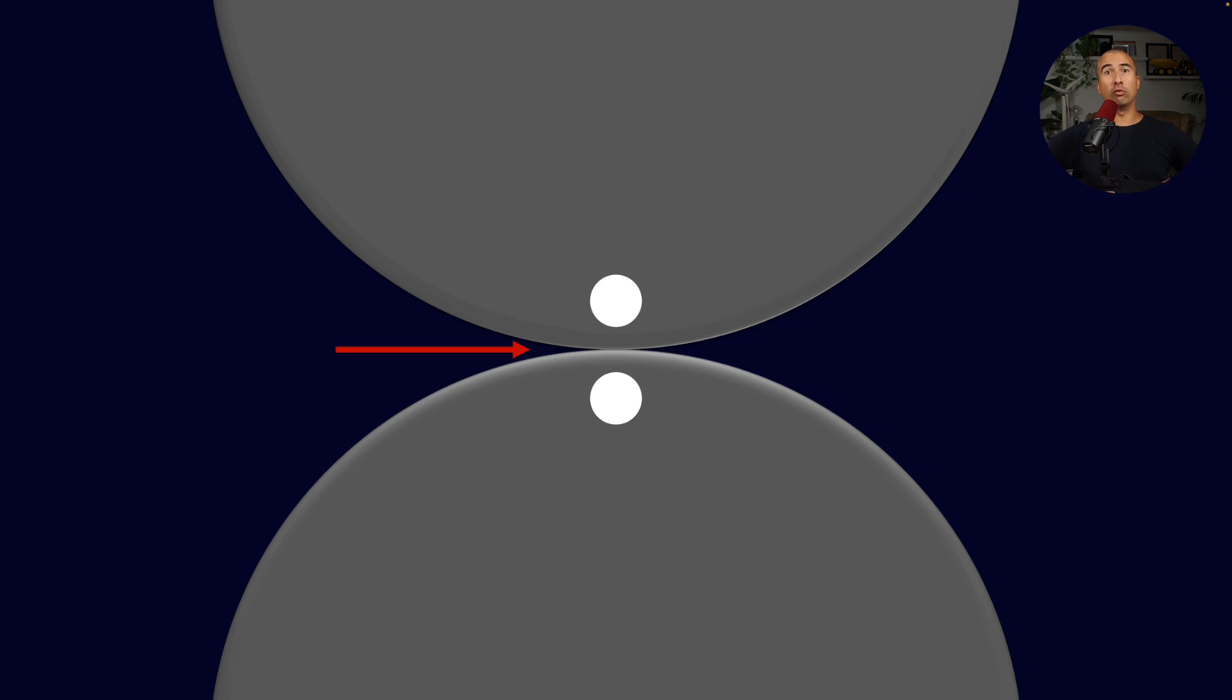And obviously one of these is more severe from a friction standpoint than the other. So if we have two balls that are rolling relative to each other, the amount of friction generated is much less than if one is held stationary and the other one is sliding.